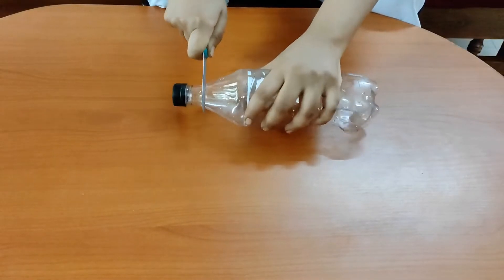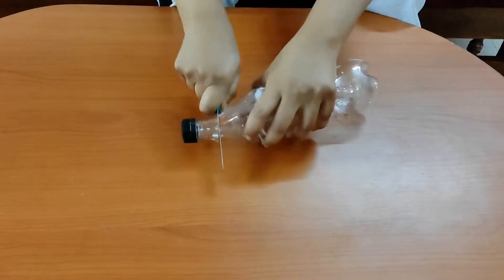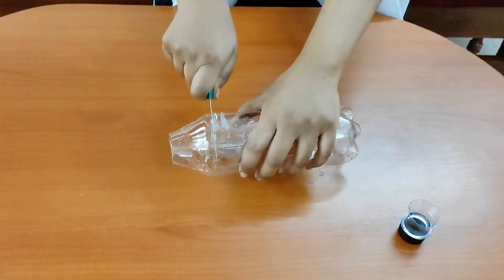First, we will take the plastic bottle and cut the top part of it. Now, we will cut this part of the bottle.